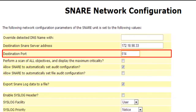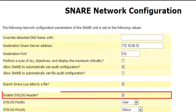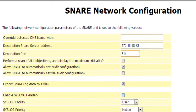You can also change this to some other port number, but remember to update the same in the Event Log Analyzer server as well. Now, enable the Syslog Header option. This option will ensure that all the events being collected include a timestamp and the host name.